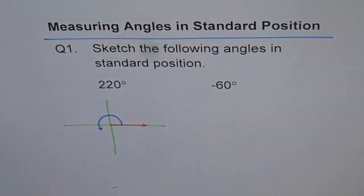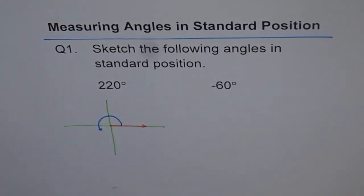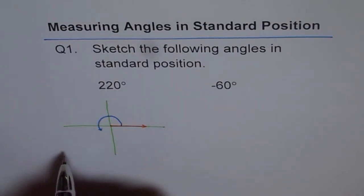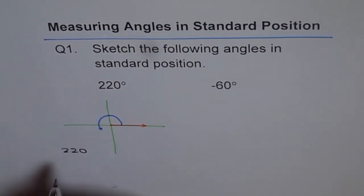How much? 220 degrees. Now you know how much is 220 degrees. 220 degrees is more than 180 degrees. By how much? 220 minus 180 is 40 degrees more. Is it okay?